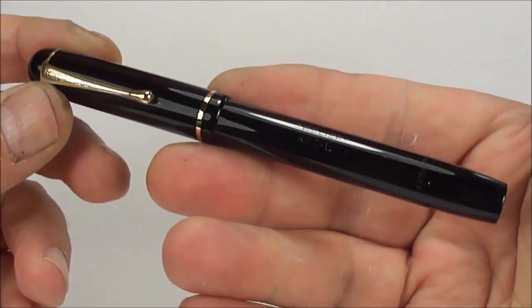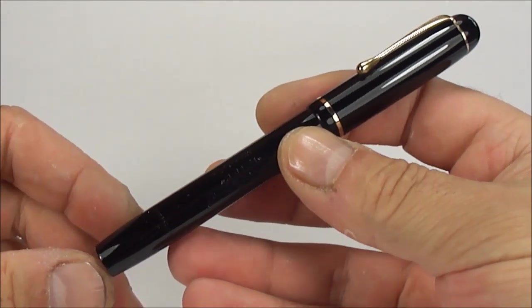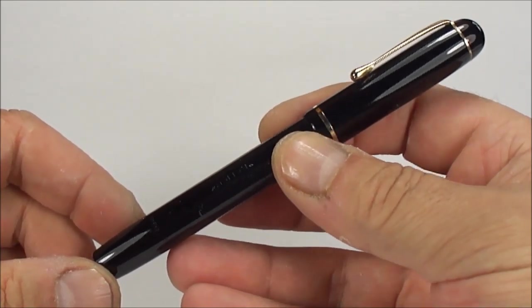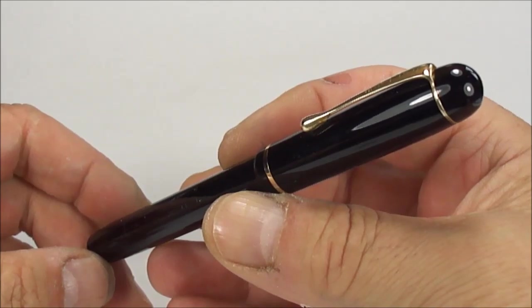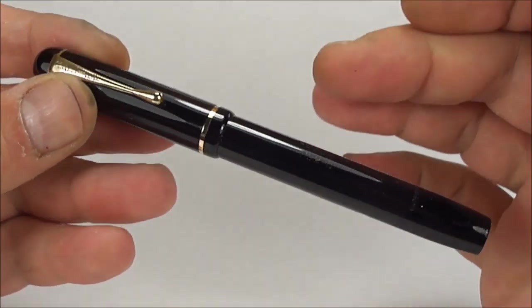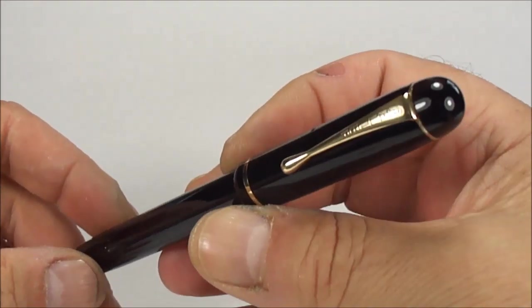The Relief pens were made from around the 1930s through to about the 1950s. This pen, because of the barrel imprint, I date to maybe the 1940s, maybe even getting on for the 1950s.